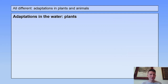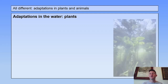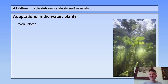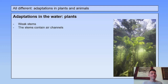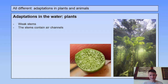Now, adaptations in water plants. Water plants have weak stems. Because they live in the water, they don't need thick stems, so they can spare the energy. Often the stems contain air channels, especially with water lilies. They have these special air channels, which allow the leaves to float to the surface so the plant can carry out photosynthesis.